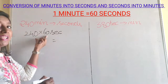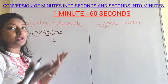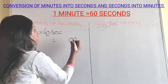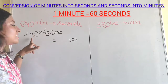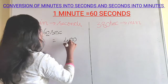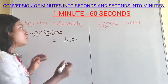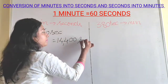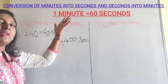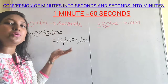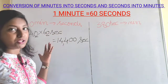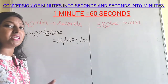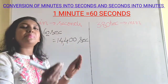So we bring down the 2 zeros, since 0 times anything is 0. Next, 24 into 6: 6 fours are 24 and 6 twos are 12, add 2 to get 14. So the answer is 14,400 seconds. We took 1 minute equals 60 seconds, substituted and multiplied by 240, and got 14,400 seconds — converting minutes into seconds simply by multiplication.